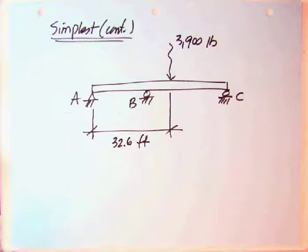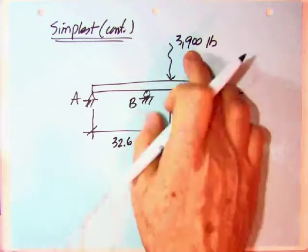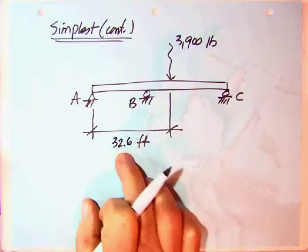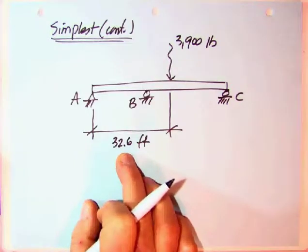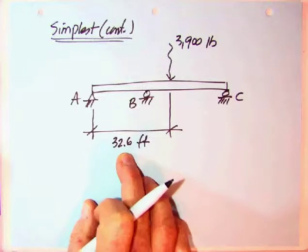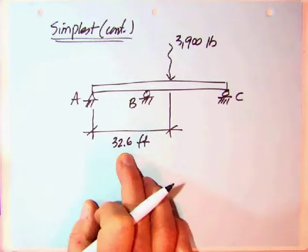Okay, well let's see what this looks like as a final answer. Showing that now on our beam, we've got the 3900 pounds and the 32.6 feet. And now what we have is what we refer to as the simplest resultant of a multiple force system.